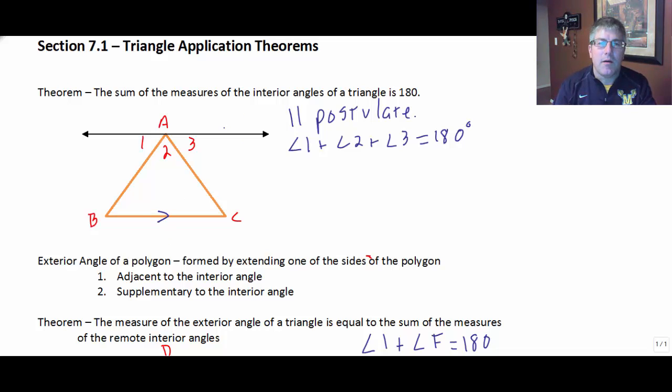Well, since my lines are parallel, because I drew them parallel, the parallel postulate, then I know that because of my alternate interior angles, angle B is then congruent to angle 1, and angle C is congruent to angle 3, also by alternate interior angles.